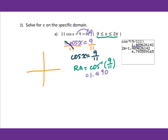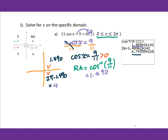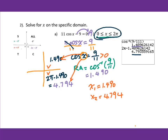Then we go to the diagram. Since cosine is positive, we go to the first and fourth quadrant. For the first quadrant, that's the reference angle 1.490. For the fourth quadrant, we do 2pi minus 1.490, and we put this into the calculator to get 4.794. Then we check the angle — x equals these two angles. Therefore, x1 equals 1.490 and x2 equals 4.794. These are the solutions for x between 0 to 2pi.